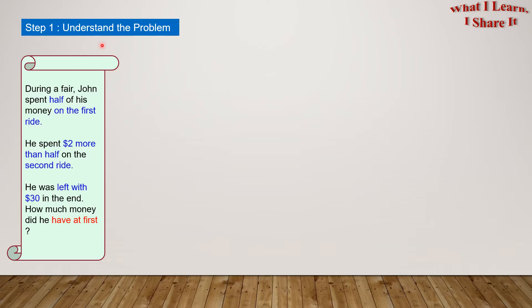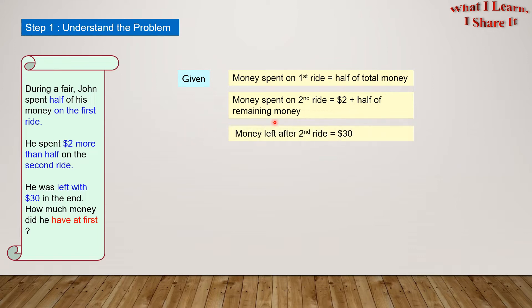Step 1. Understand the problem. What is given to us? We are given that the money spent on the first ride equals half of the total money. The money spent on the second ride equals $2 plus half of the remaining money. And the money left after the second ride equals $30. What is there to find? We have to find the total money John had at first.